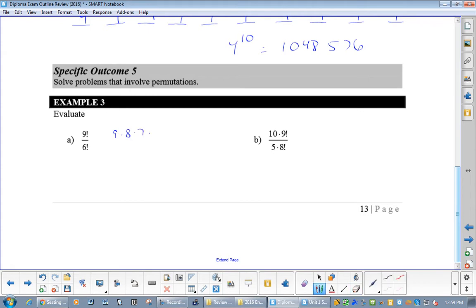Nine times eight times seven times six factorial over six factorial. Those will cancel. And then, you just multiply nine times eight times seven, which is 504.